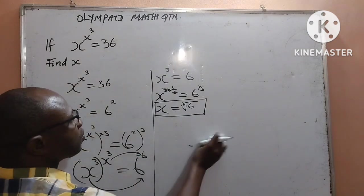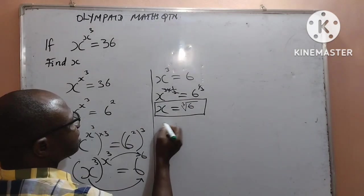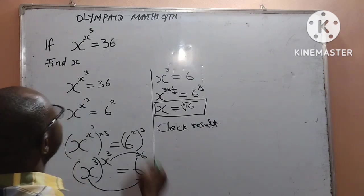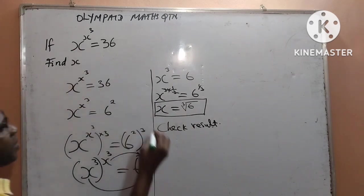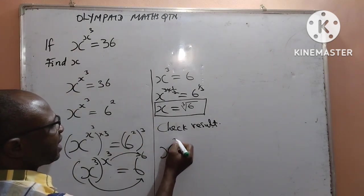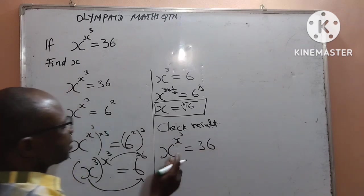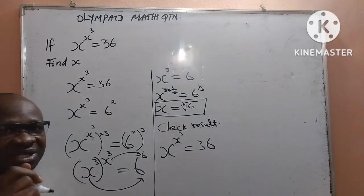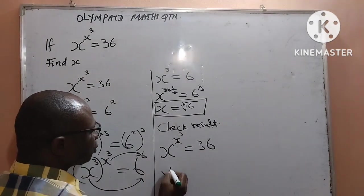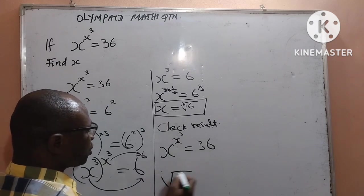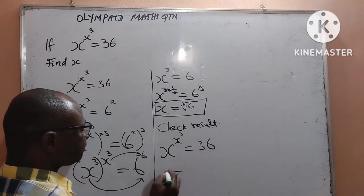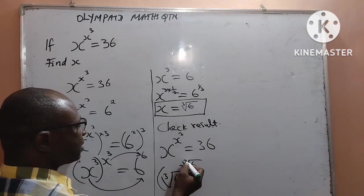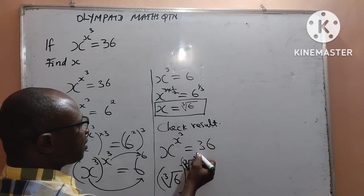We are going to substitute back into the question to ensure our answer is correct — check result. Anywhere I see x, I put the cube root of 6. From the question, x to the power of x to the power of 3 equals 36. I evaluate the left hand side by substituting: cube root of 6, to the power of cube root of 6, all to the power of 3. We want to see if it equals 36.